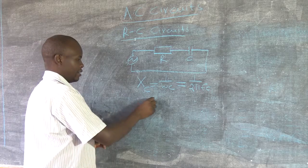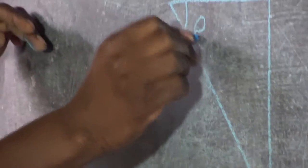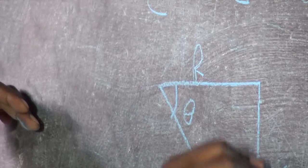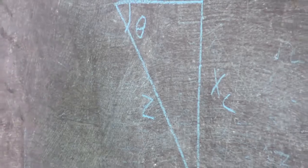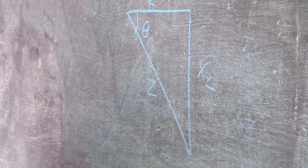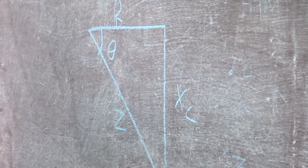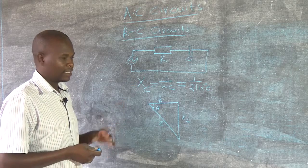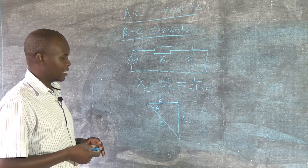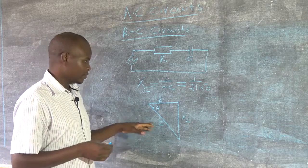And also we have the impedance triangle of this. It is normally drawn upside down for some reasons. This is theta. This is R. XC. This is Z. It is drawn this way because the current in a capacitor lags the current in the resistor. Unlike the other way around for inductance.